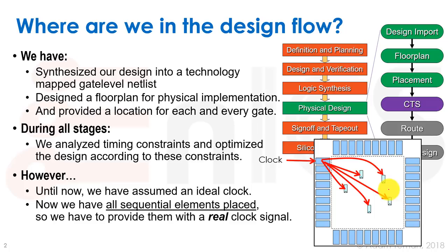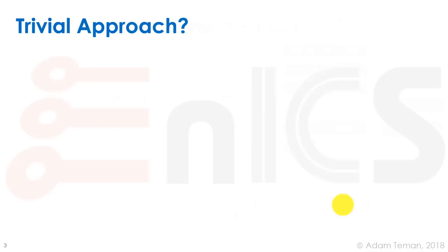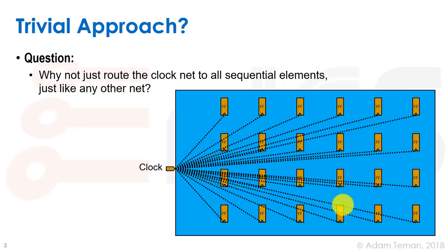We have all the sequential elements placed — flip-flops around the design, and possibly some hard macros that also have a clock input. Now we have to provide an actual clock signal to all of them. What's the trivial approach? Why don't we just route the clock net like any other net, bringing it to each and every flip-flop in a general way?